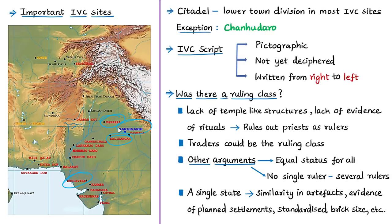Most Harappan cities were divided into two areas: a citadel and a lower town. The citadels were generally fortified and constructed at higher areas, though this was not uniform across all sites. For example, at the Chenhudaro site in Pakistan, there was no citadel and lower town concept. Further knowledge about IVC came through excavations that discovered seals used for trade, artifacts, and other archaeological evidence.